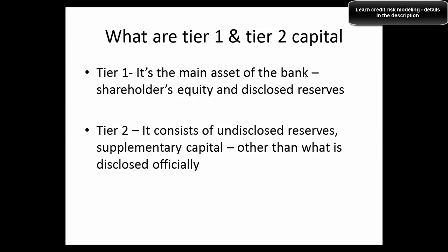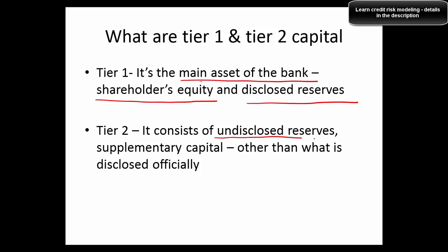What are Tier 1 and Tier 2 capital? Tier 1 capital is the main asset of the bank, which includes shareholders' equity and disclosed reserves. Tier 2 capital consists of undisclosed reserves and supplementary capital other than what is officially disclosed. There is some capital — not much — that is not disclosed by the bank, and that falls under Tier 2.